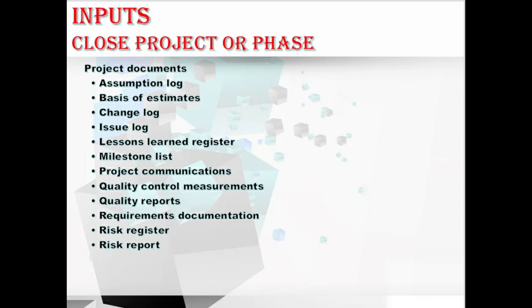Coming to quality reports, the information presented in the quality report may include all quality assurance issues managed or escalated by the team, recommendations for improvement, and a summary of findings from the control quality process.